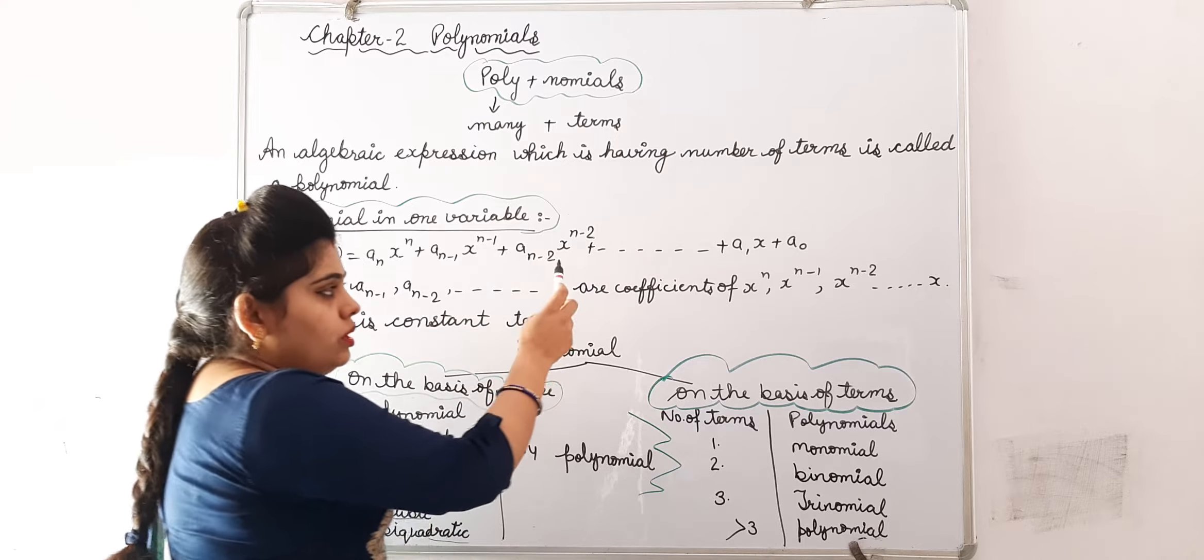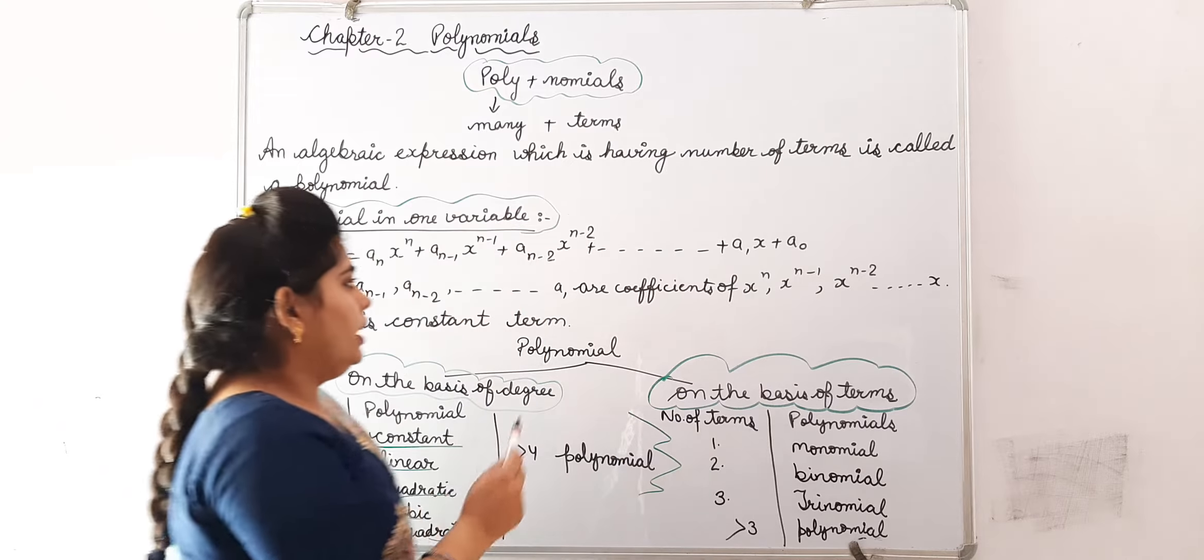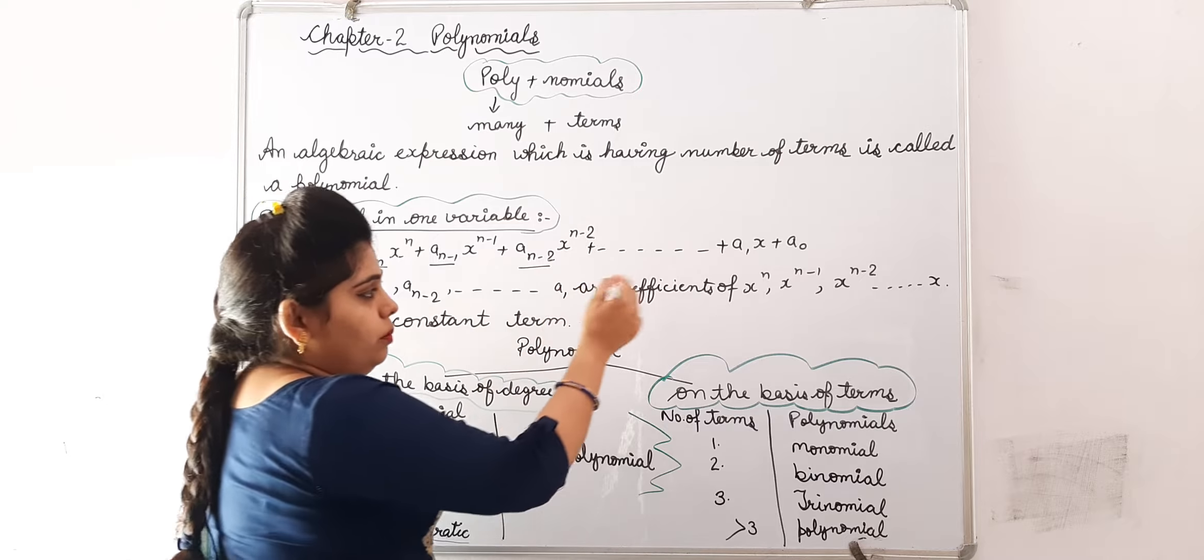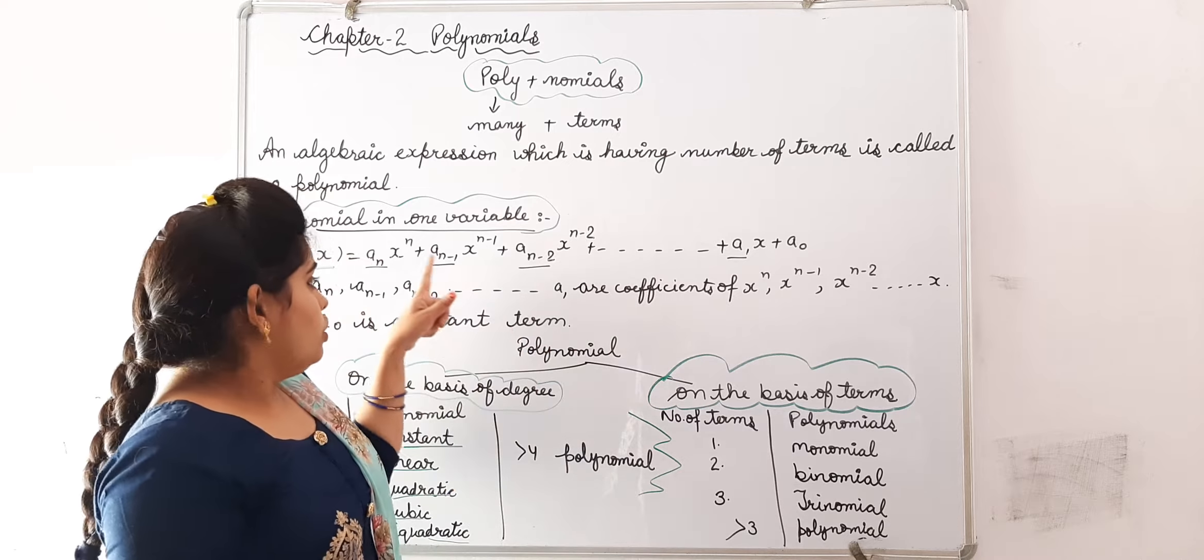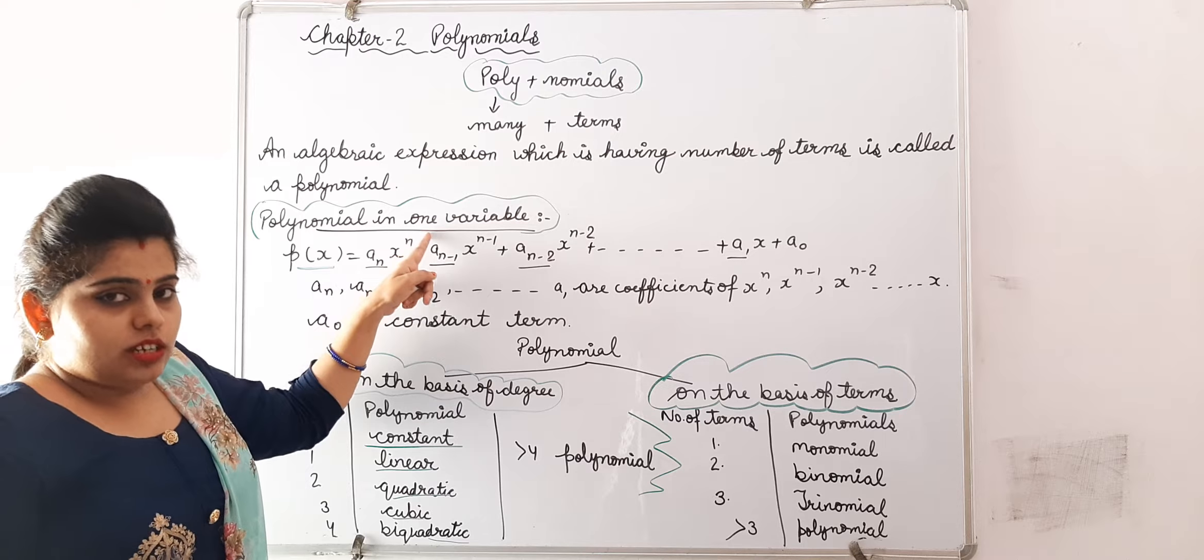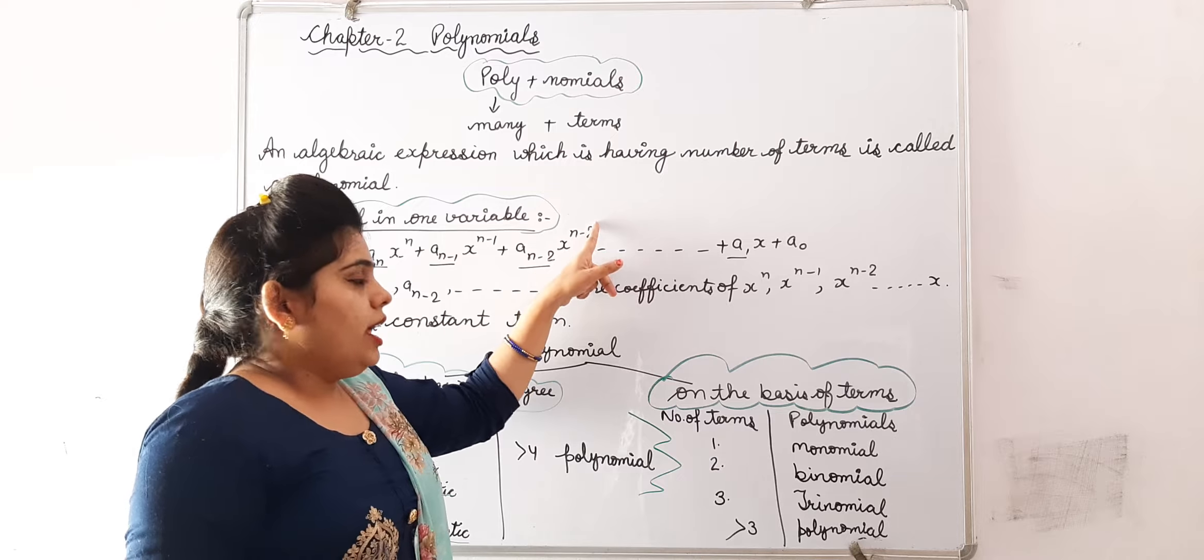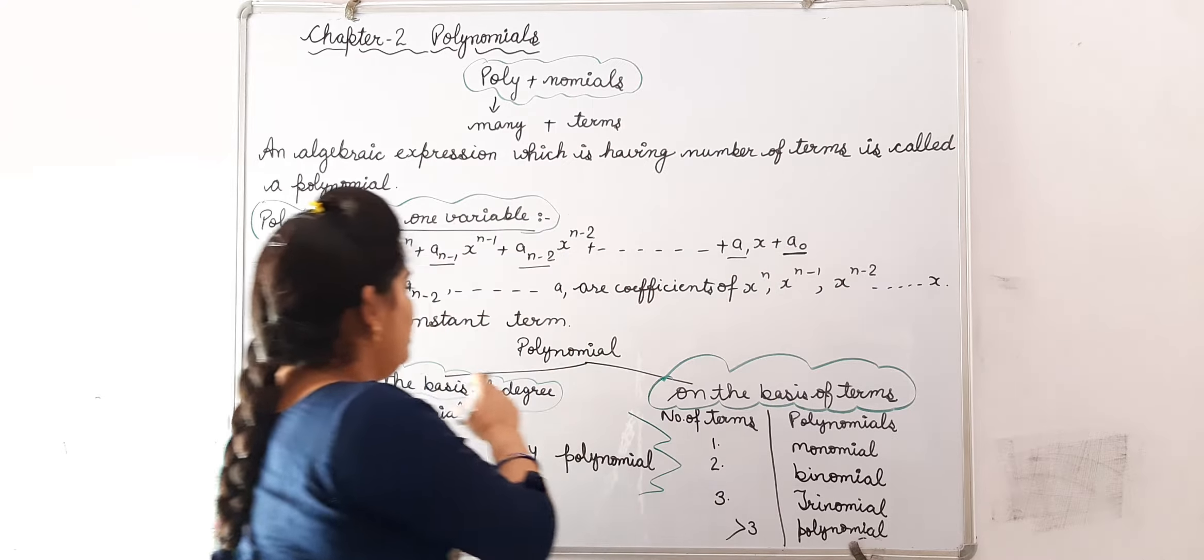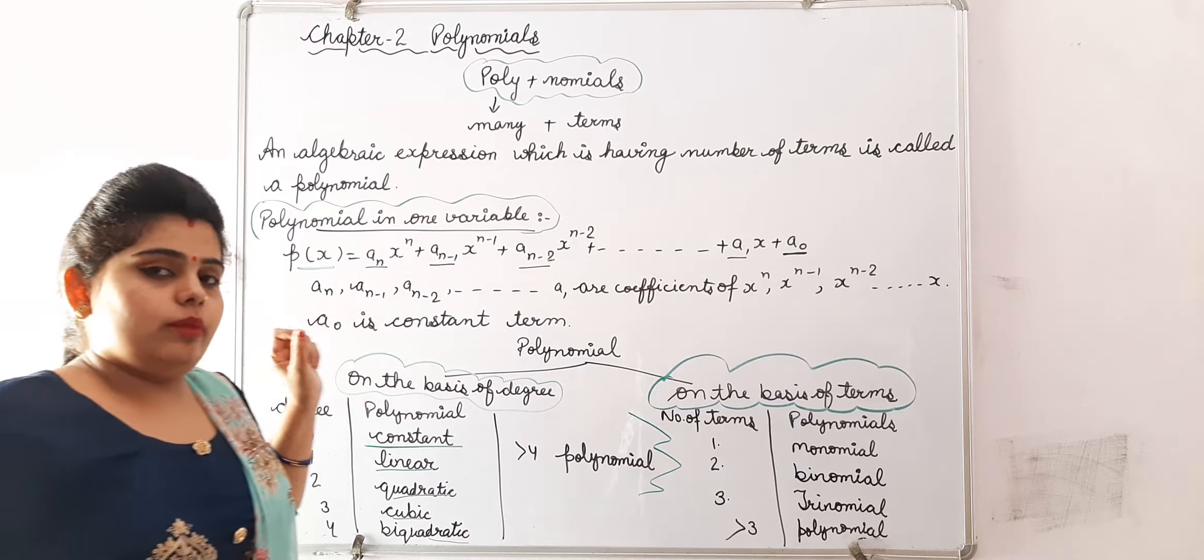Where this aₙ, aₙ₋₁, aₙ₋₂ up to a₁ are coefficients of variable X having different powers - X raised to power n, X raised to power n minus 1, X raised to power n minus 2, so on up to X. And this a₀ is called constant term. This is about polynomial in one variable.